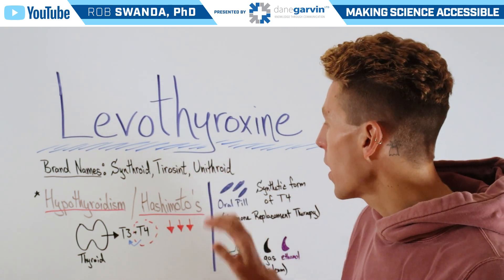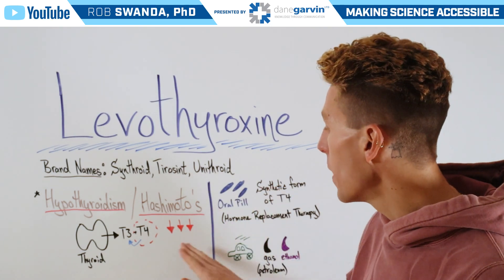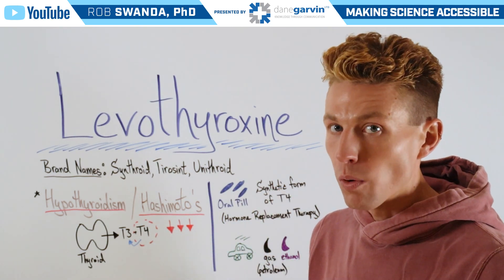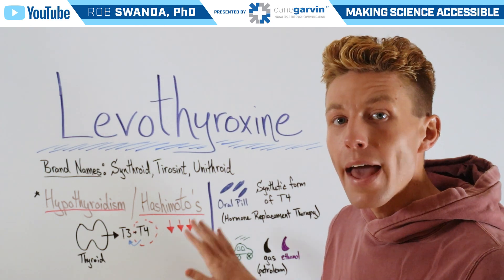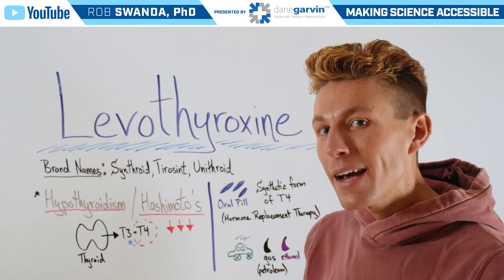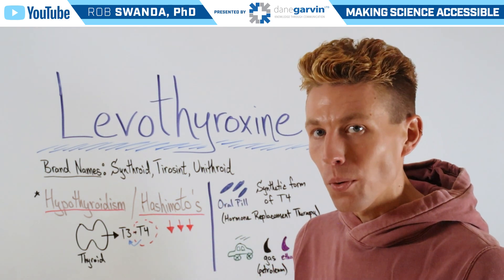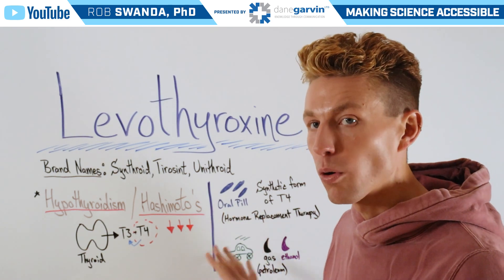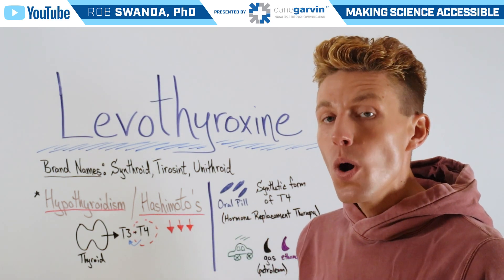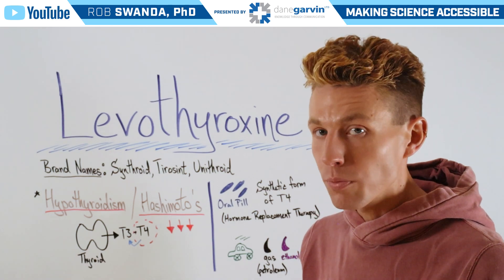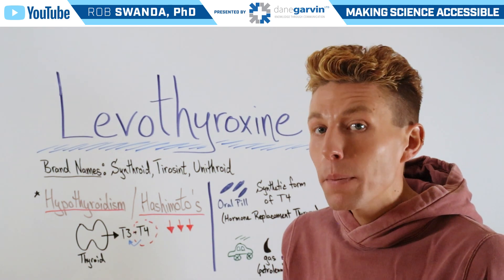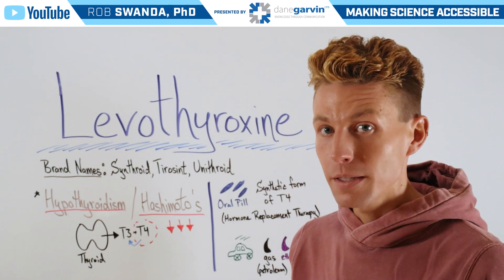Levothyroxine is a synthetic form of T4 — that inactive form of thyroid hormones — and it's commonly given as an oral pill. Because it's inactive, that's really important because it allows that synthetic form to get to the different organs throughout the body, where it can then be converted to T3 to exert its functions, such as helping one maintain their metabolism.